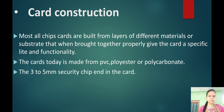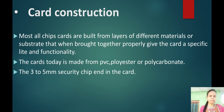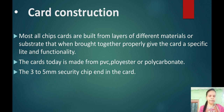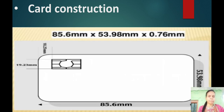Card construction: Most cards are built from layers of different material substrates which, when brought together, give the card specific light and functionality. The card today is made from PVC, polyester, and polycarbonate, with a 3.25 mm chip embedded in the card.